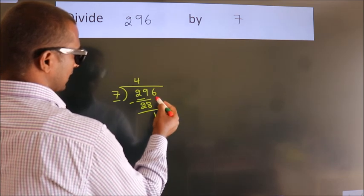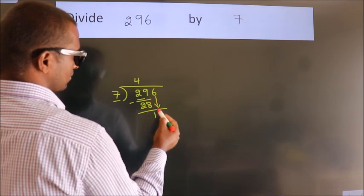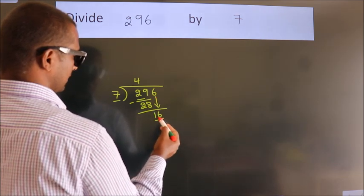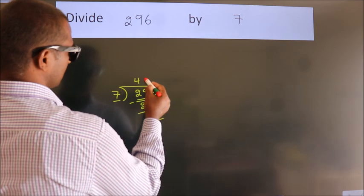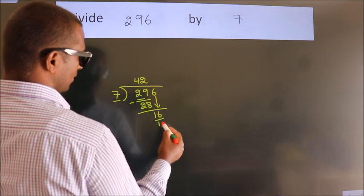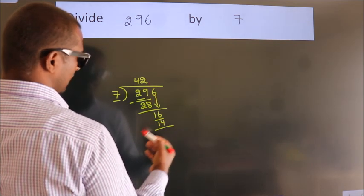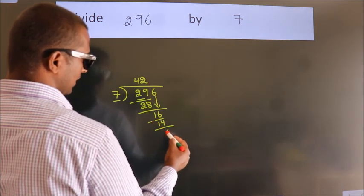After this, bring down the beside number. So 6 down. So 16. A number close to 16 in the 7 table is 7 twos, 14. Now we subtract. We get 2.